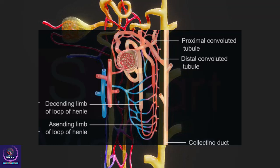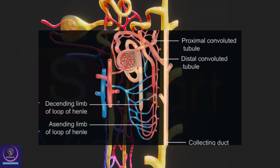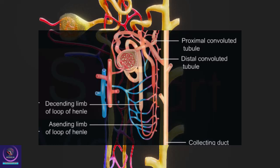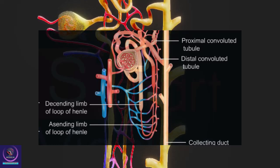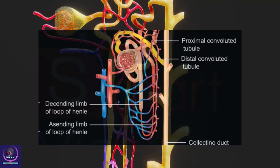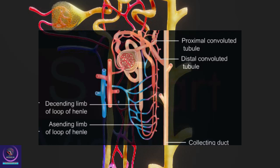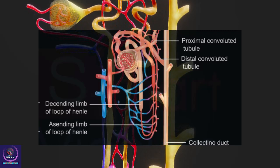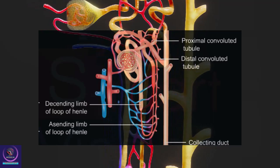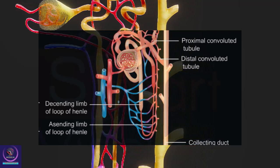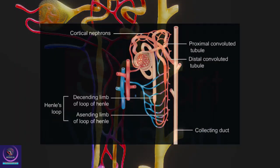The DCTs of many nephrons open into a straight tube called the collecting duct, many of which converge and open into the renal pelvis through medullary pyramids in the calyces. The Malpighian corpuscle, PCT, and DCT of the nephron are situated in the cortical region of the kidney, whereas Henle's loop dips into the medulla.